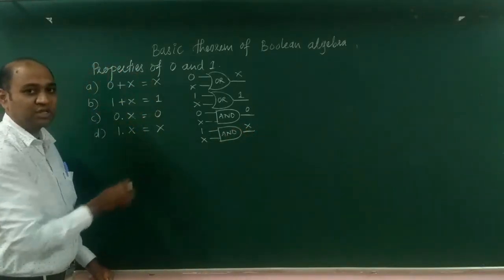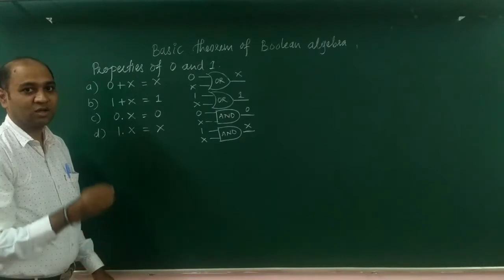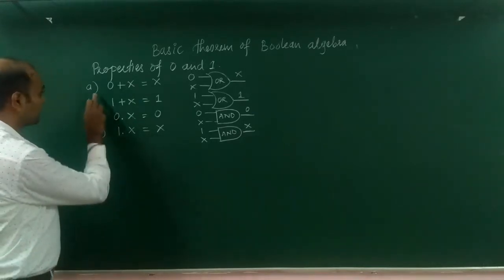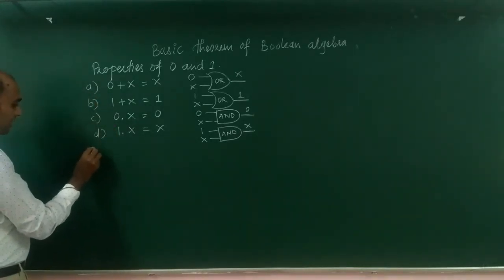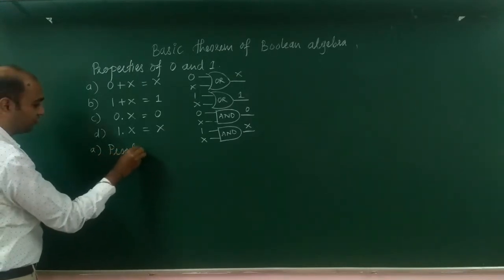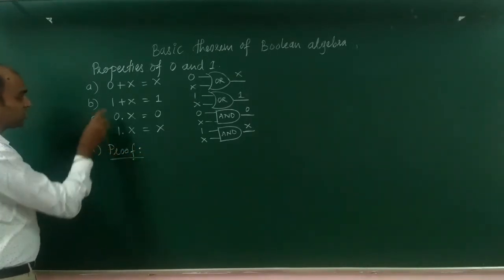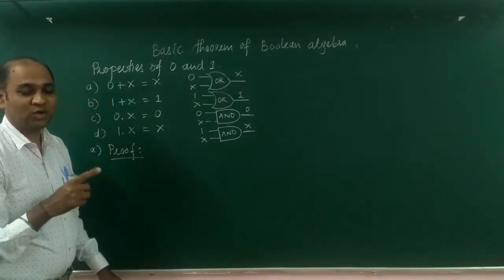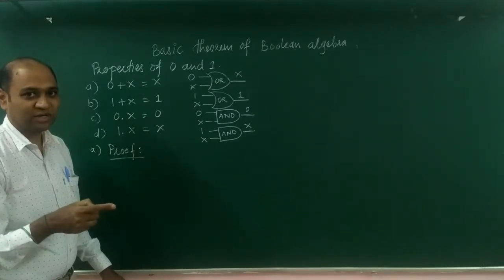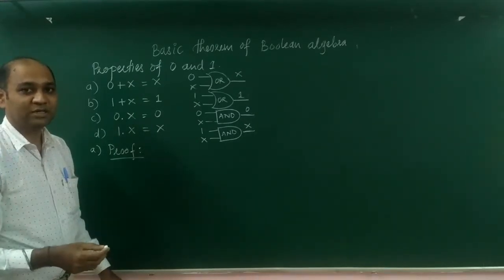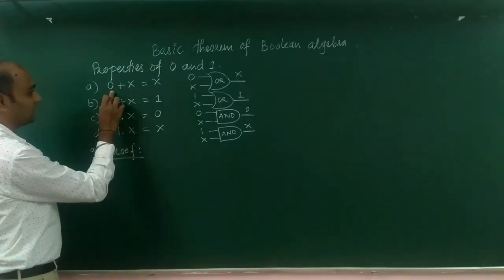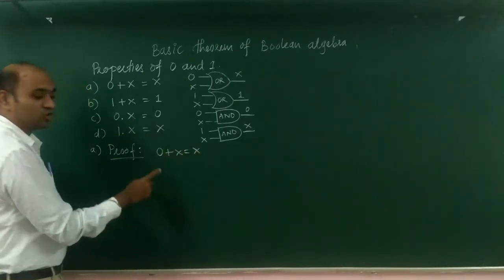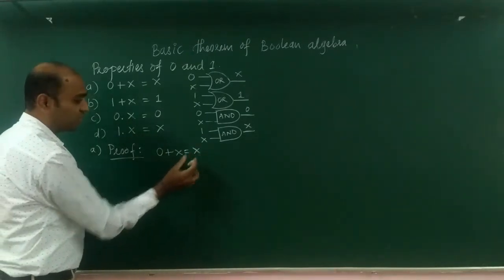We are going to prove each of these four properties using both the algebraic method and the truth table. So let us continue with the first one, that is A. We are going to prove this theorem by substituting the value of x equal to 0 and x equal to 1 — that is, proof by perfect induction.